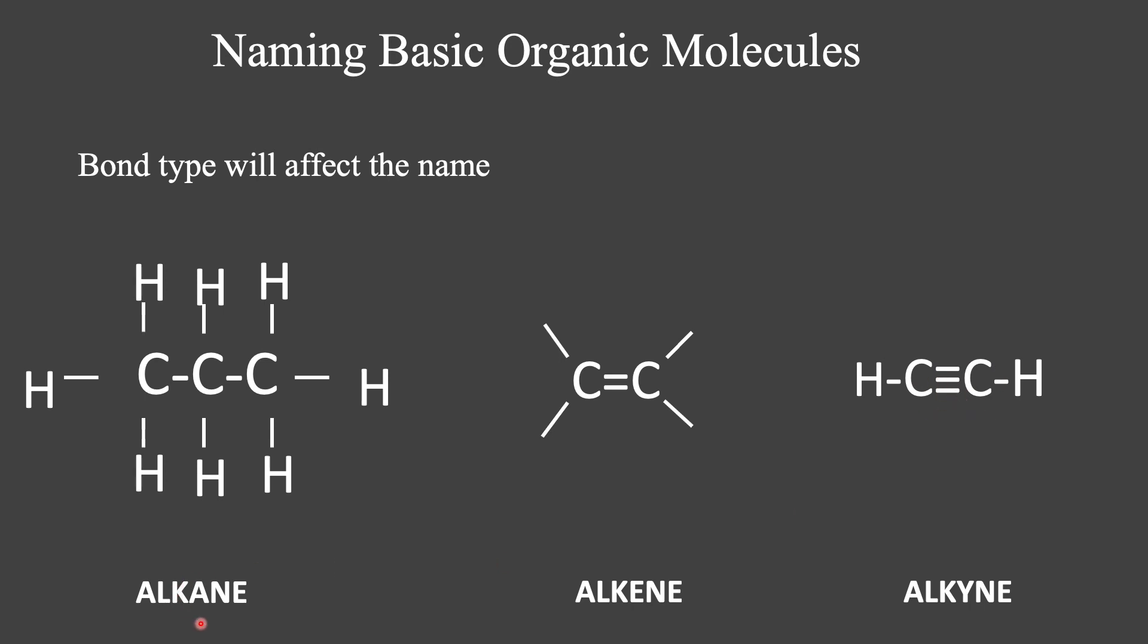So you're just going to have to remember these names. This would be an alkane, an alkene, and an alkyne. And so these names are going to be useful when you start naming basic organic molecules, because you're going to use this suffix, the ane, the ene and the yne, when you want to name things. And I'll explain that in a bit.